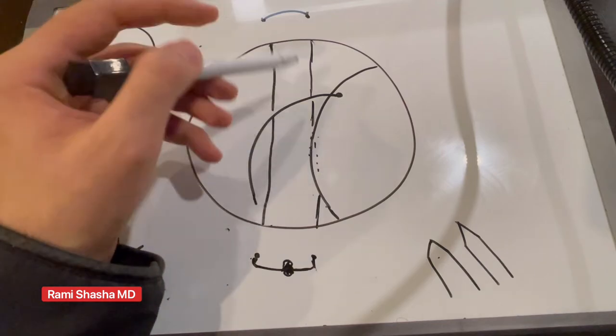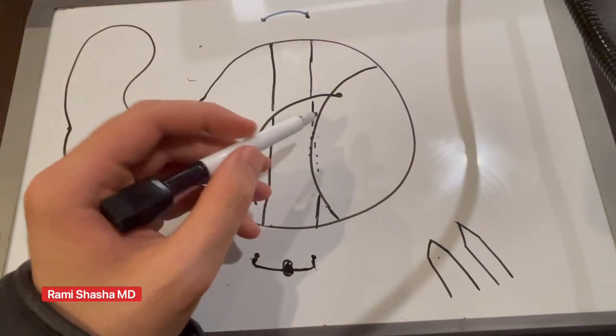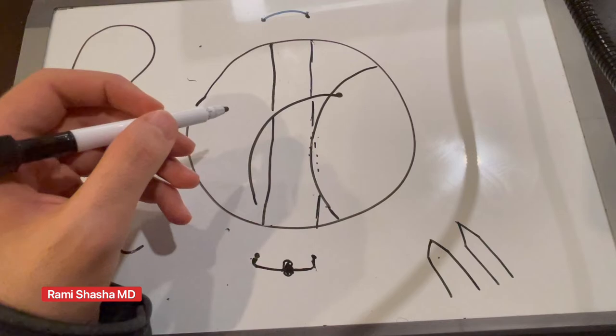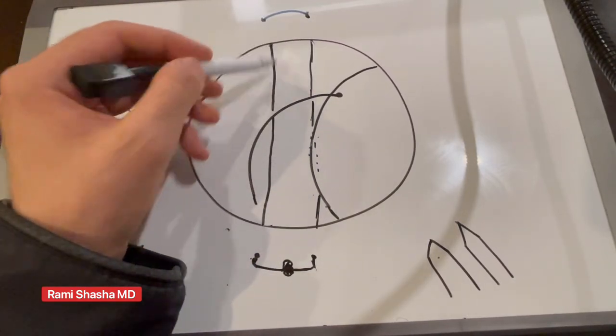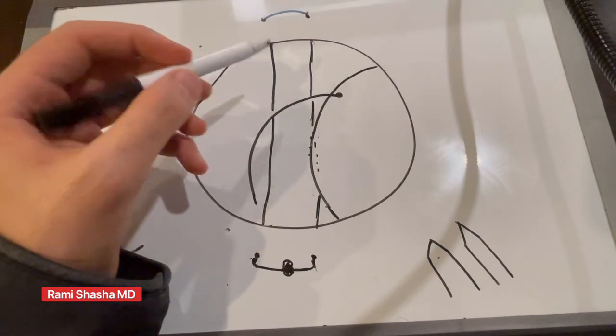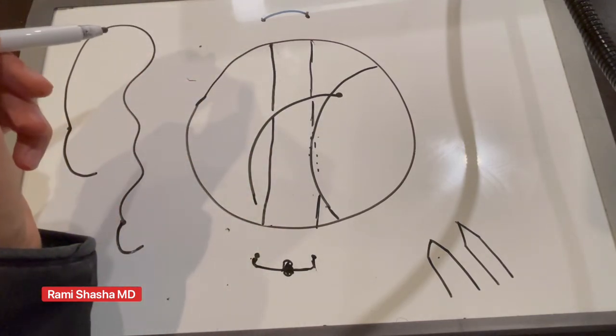These suture lines will act like a backboard, that way you can mobilize the IOL with your micro instrumentation and these suture lines will prevent the IOL from falling backwards.